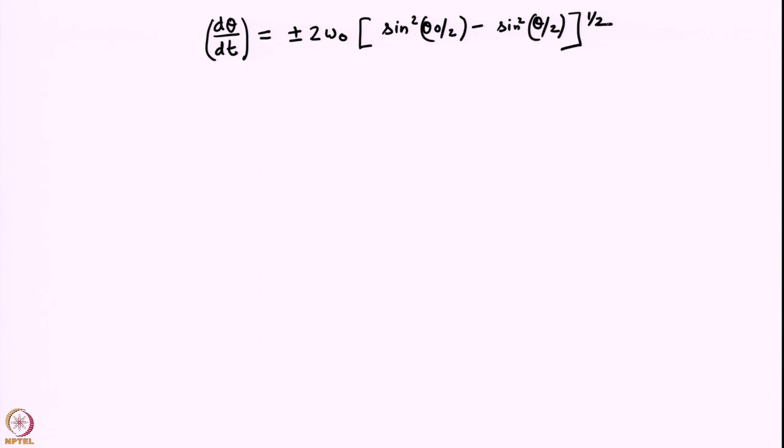Our next task is to integrate this equation. I will show that using a simple set of manipulations, we can convert this into elliptic integrals. Once we convert this into an elliptic integral, we have already discussed that it can be expressed in terms of the inverse of the elliptic functions, and that will allow us to express θ as a function of time.